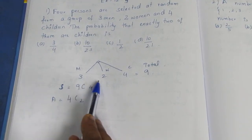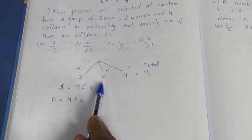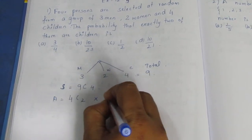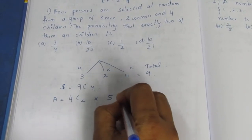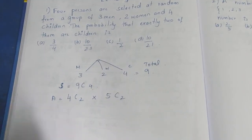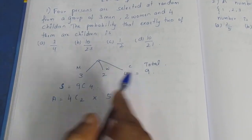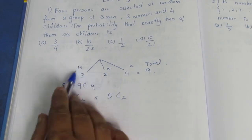When you choose from different types, you multiply. So children 4C2, and for the balance 5C2, we multiply them.